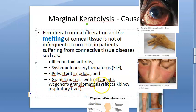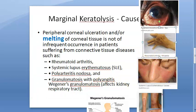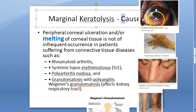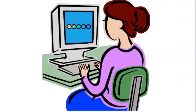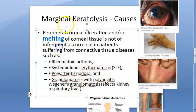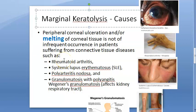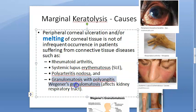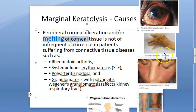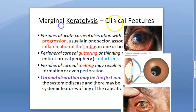Granulomatosis with polyangiitis — formerly called Wegener's granulomatosis — affects the kidneys, respiratory tract, and so on. The images depict rheumatoid arthritis, SLE, polyarteritis nodosa, and granulomatosis with polyangiitis. All these patients have connective tissue disease. So the key causes are these connective tissue diseases, and the hallmark finding is peripheral corneal melting.